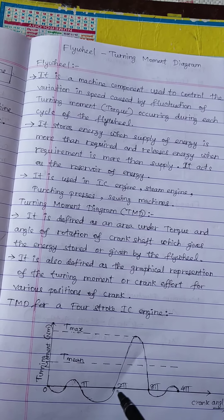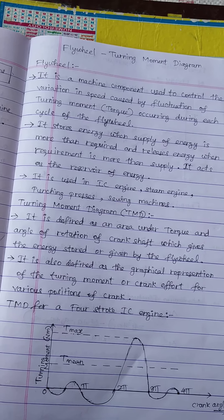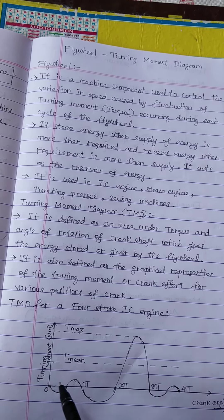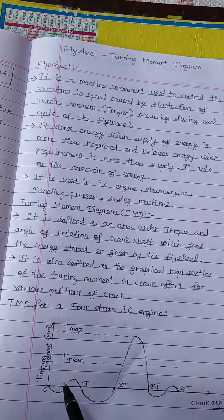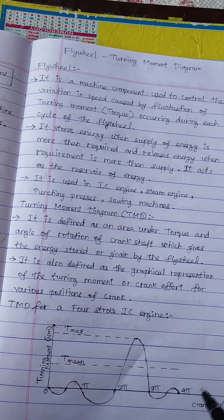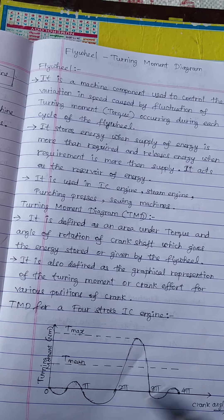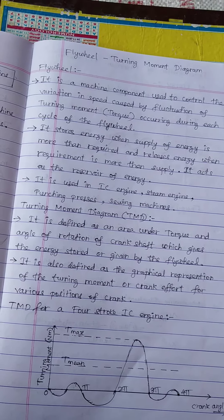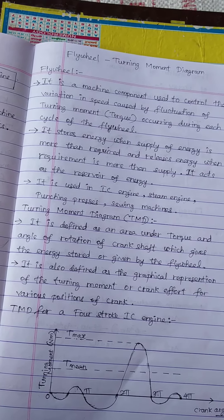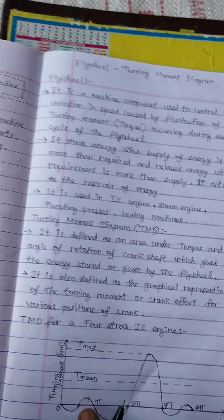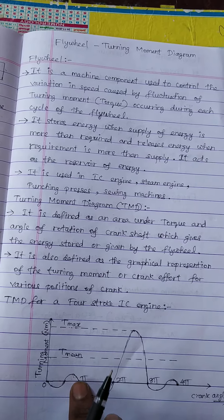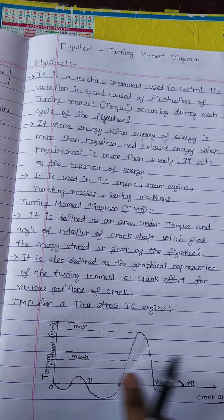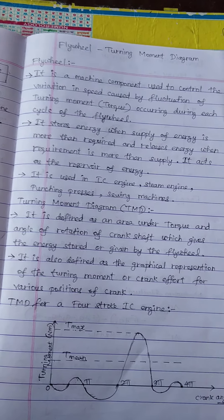Here, this positive loop indicates the inertia of the crank. I have included inertia forces in the diagram, that is why we have positive loops in some strokes.